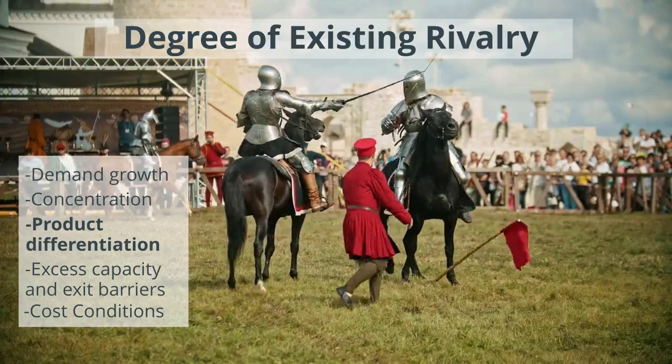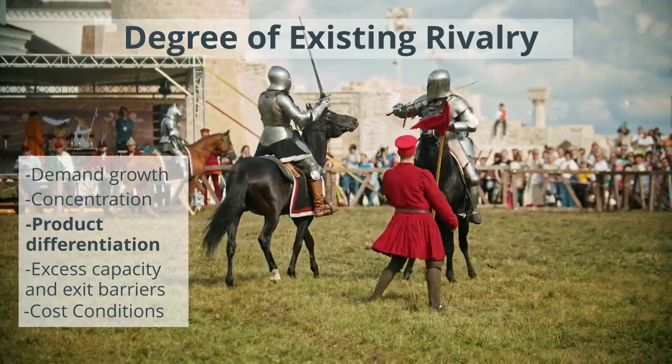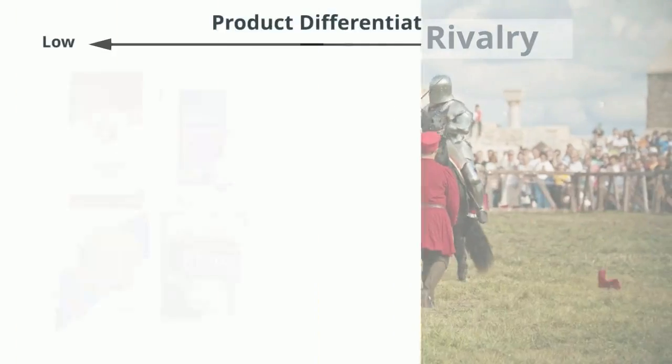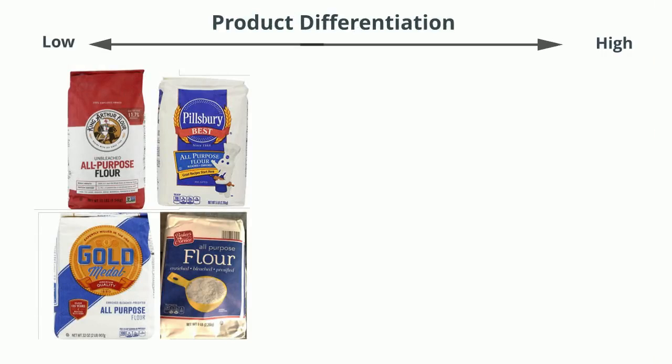Next, let's talk about product differentiation. When you have low product differentiation, such as in the market for all-purpose flour, you often have vigorous price competition. Even though you can brand the products differently and there might be minor differences, customers perceive the products as being pretty similar and won't pay significantly more for one brand versus another.